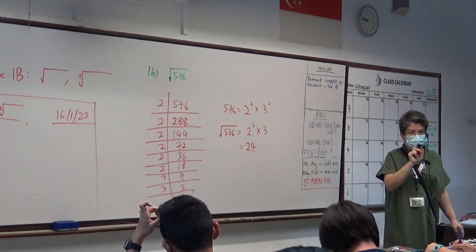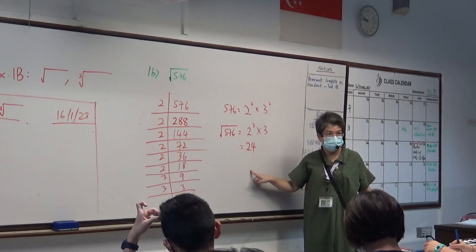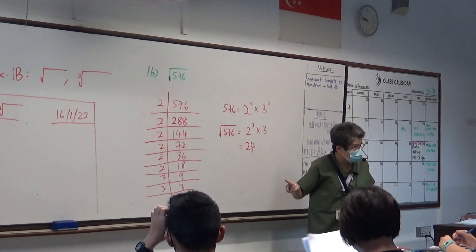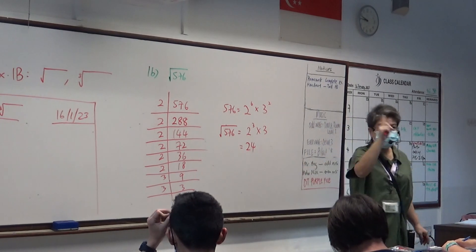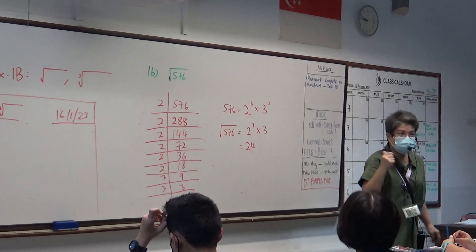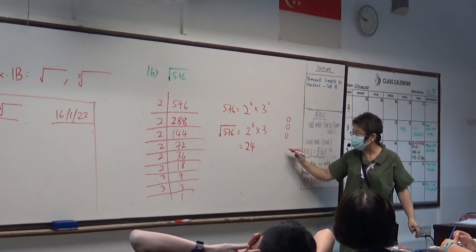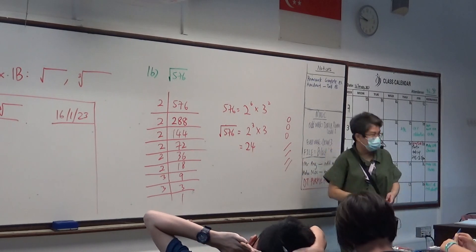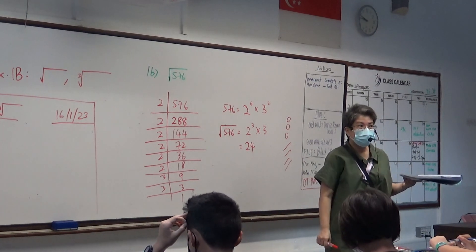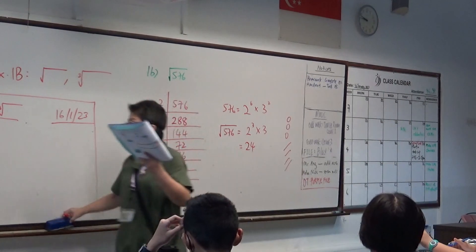Everybody listen. I don't want anyone lost again. Write this down — write the prime factorization, then write the square root working. If you're finding the square root, write square root; if you're finding the cube root, write cube root. Now I'm going to give two sets of homework on the board. One set is on the foolscap paper; another set is in the notebook. In the notebook I will circle the questions; those on the foolscap paper I'll tick. All working must be done in pencil.